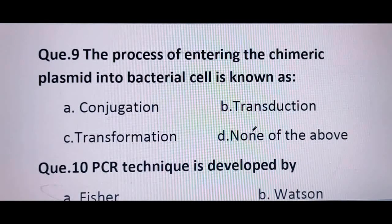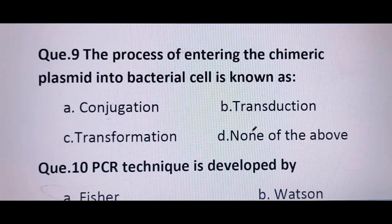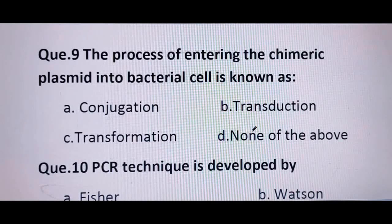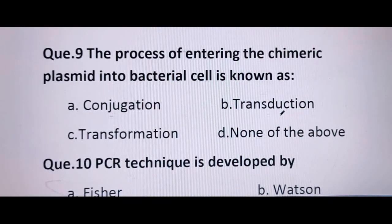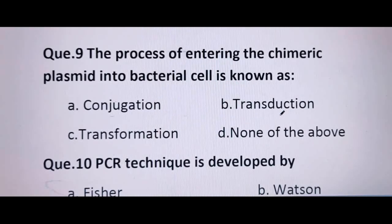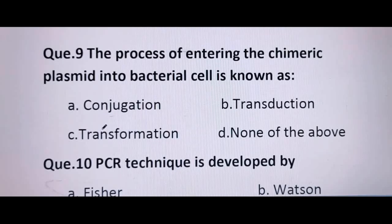Next question: the process of entering a chimeric plasmid into bacterial cells is known as — conjugation is a form of reproduction in bacteria through a conjugation tube; transduction is where foreign DNA is carried by phage vectors; in transformation, the chimeric plasmid enters into the bacterial cell. So C, transformation, is the correct answer.